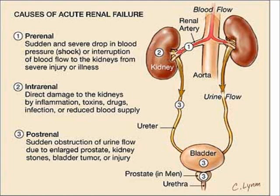Acute renal failure has three main causes: a sudden serious drop in blood flow to the kidneys, damage from some medicines, poisons or infections, and a sudden blockage that stops urine from flowing out of the kidneys.